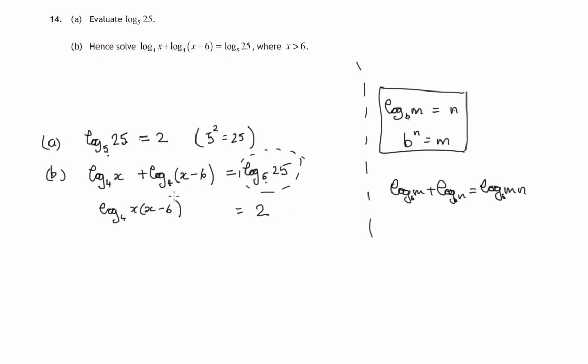So we've now ended up with another one of these log statements and let's read it as we did before. What power do you raise 4 to to end up with this number? Well, the answer is 2. So you'll end up with this number x times x minus 6 if you raise 4 to the power 2. What power do you raise 4 to to get x times x minus 6? The answer is 2. So there's x times x minus 6 equals 4 squared, which is 16.